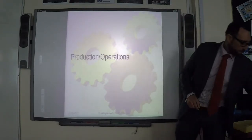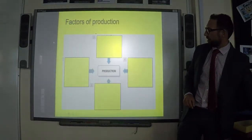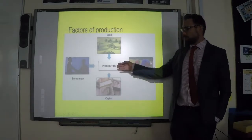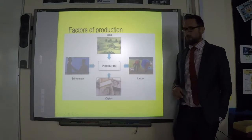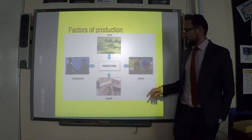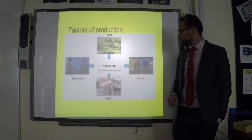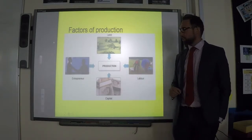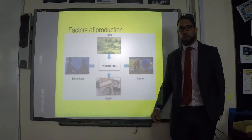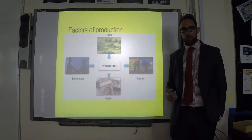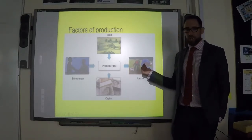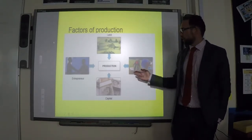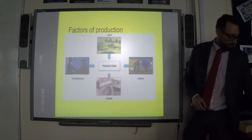To get us started, a quick recap: in order to produce a product we need the four factors of production. Thinking right back to the beginning of Year 10, these are land, labor, capital, and entrepreneur. Capital is the money and finance required to start the business; the entrepreneur is the person taking the risks and investing their hard cash using their skills to start the business; and labor is the manual workers and employees. We also need land — a space to actually manufacture the products.